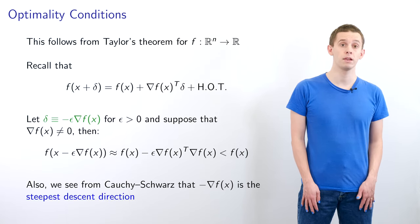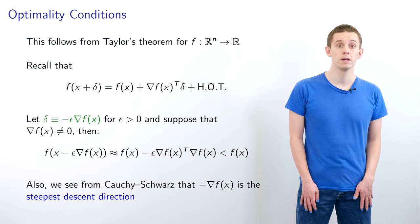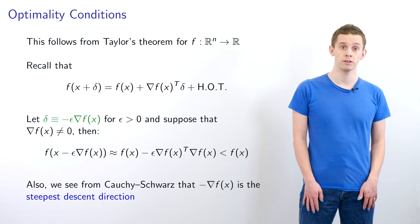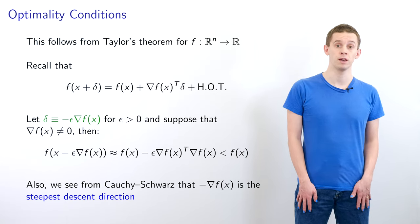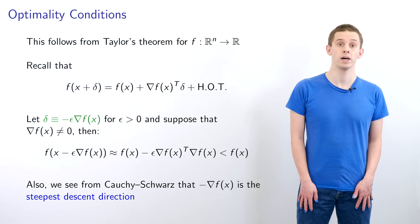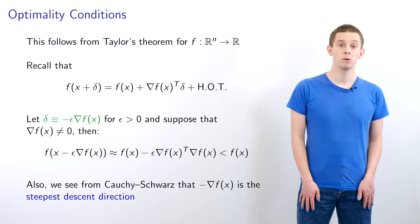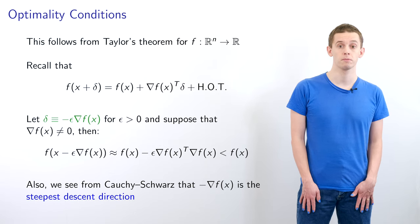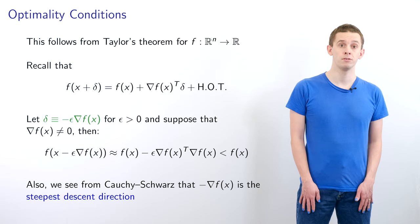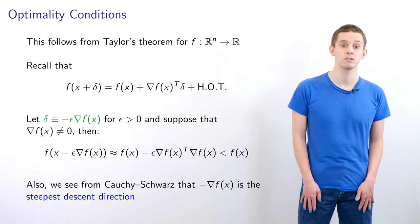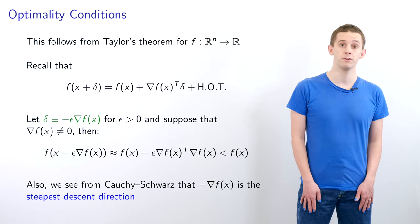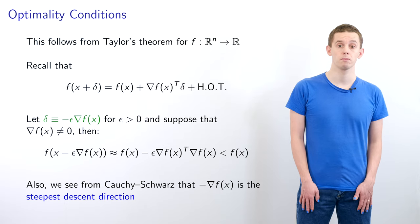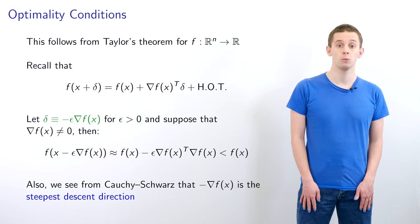To see this, let's look at Taylor's theorem for f from ℝⁿ to ℝ. In a previous video, we showed that f(x + δ) = f(x) + ∇f^T δ + higher order terms. If we put δ = -ε∇f where ε > 0, and suppose ∇f is non-zero, then f(x - ε∇f) = f(x) - ε∇f^T ∇f, which is strictly less than f(x). In addition, from the Cauchy-Schwarz inequality, we can conclude that minus ∇f is the steepest descent direction.